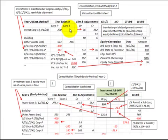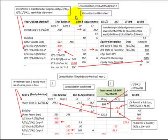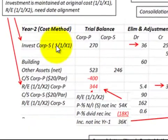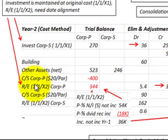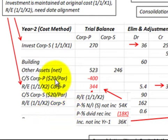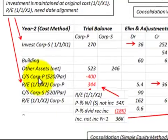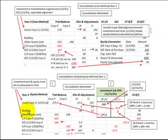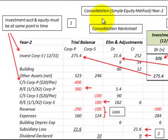We're going to make a comparison between the equity method and the cost method when we're making a consolidation — consolidating the parent's financial statements with the subsidiary's financial statements. Our starting point with both methods is how we align our investment account in the subsidiary with the equity accounts for the parent and the subsidiary. We'll start with the equity method.